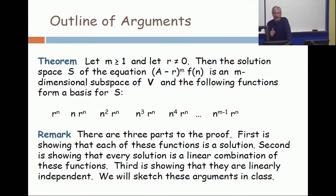We already did the case m equals 1. We showed that if you take (A - r) and apply it to a function and you get 0, then that function is a constant times r^n. We did that with an induction argument. So the case m equals 1 is done. That's the base case in the induction.